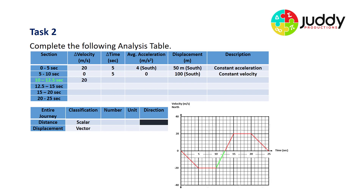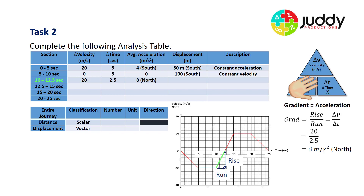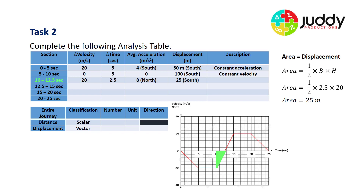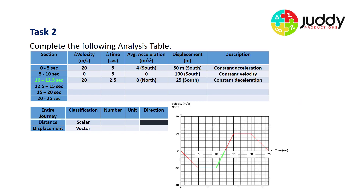Now we break this into smaller sections. From 10 to 12.5 seconds, we have a change in velocity of 20 meters per second — starting at 20 meters per second south and decelerating to zero by 12.5 seconds. Change in velocity is 20, change in time is 2.5, giving a gradient of 8 meters per second squared in the northerly direction. The displacement is a smaller triangle: half of a base of 2.5 and a height of 20 gives 25 meters south — constant deceleration from the south perspective.